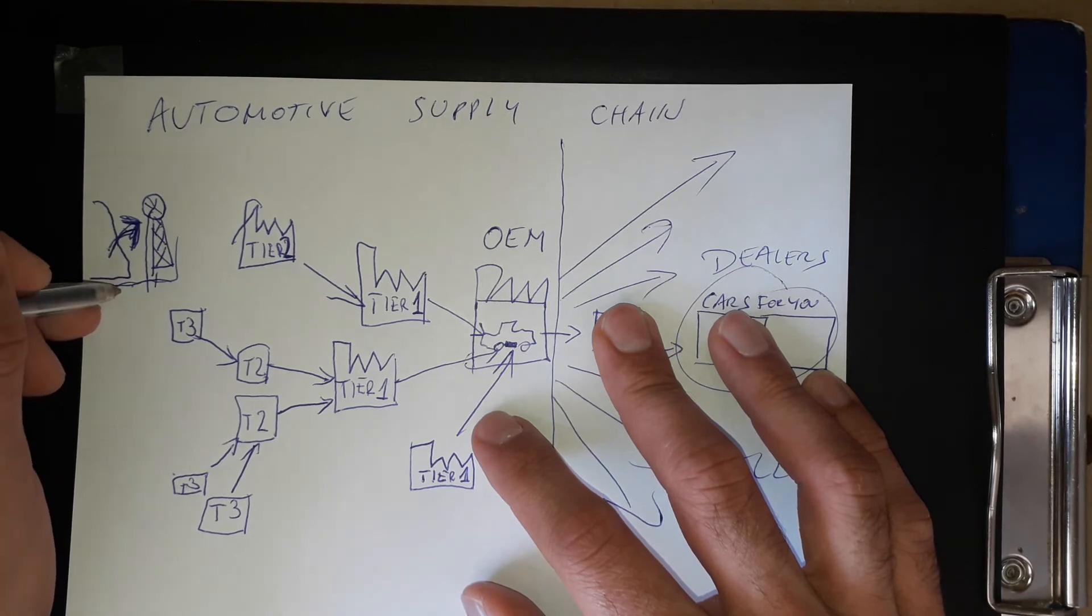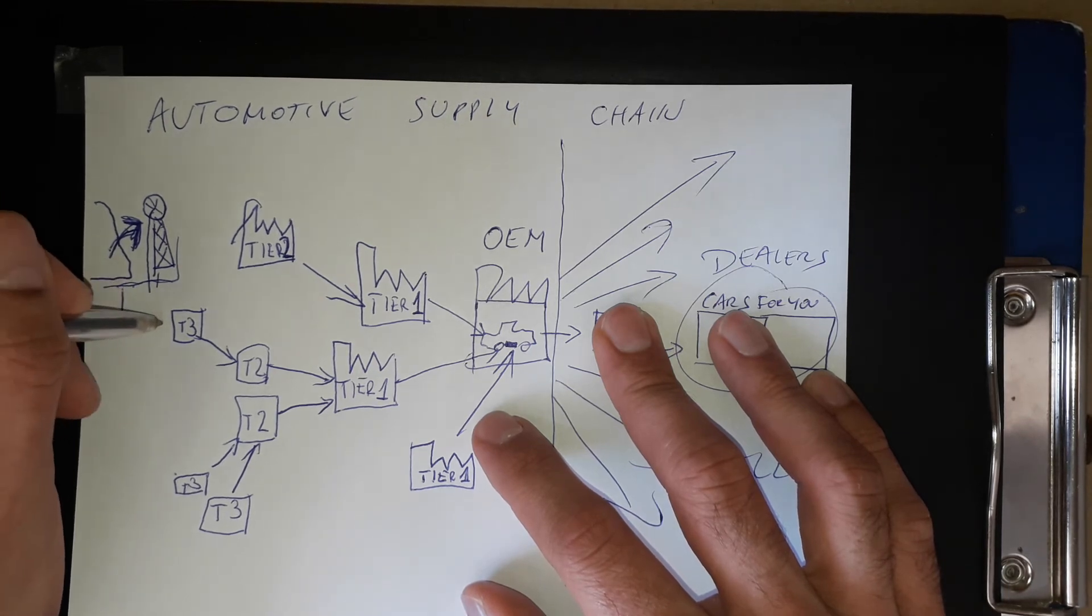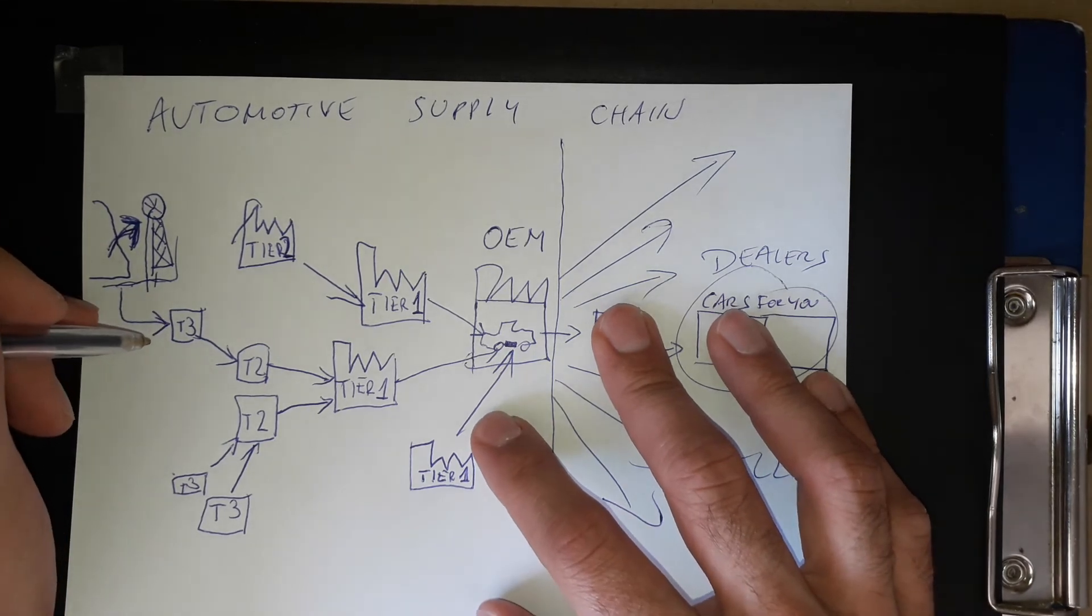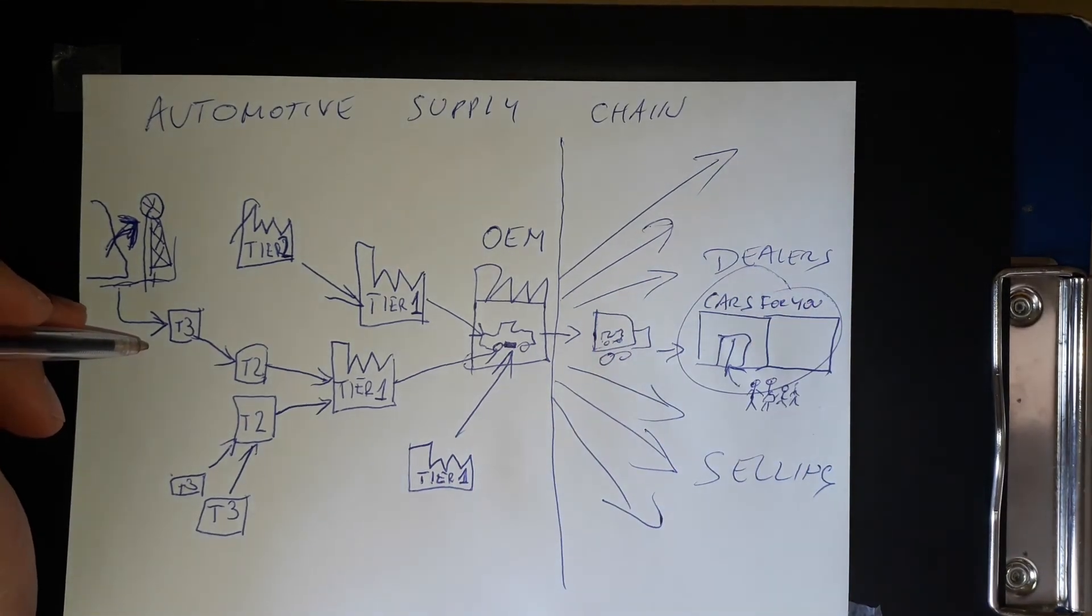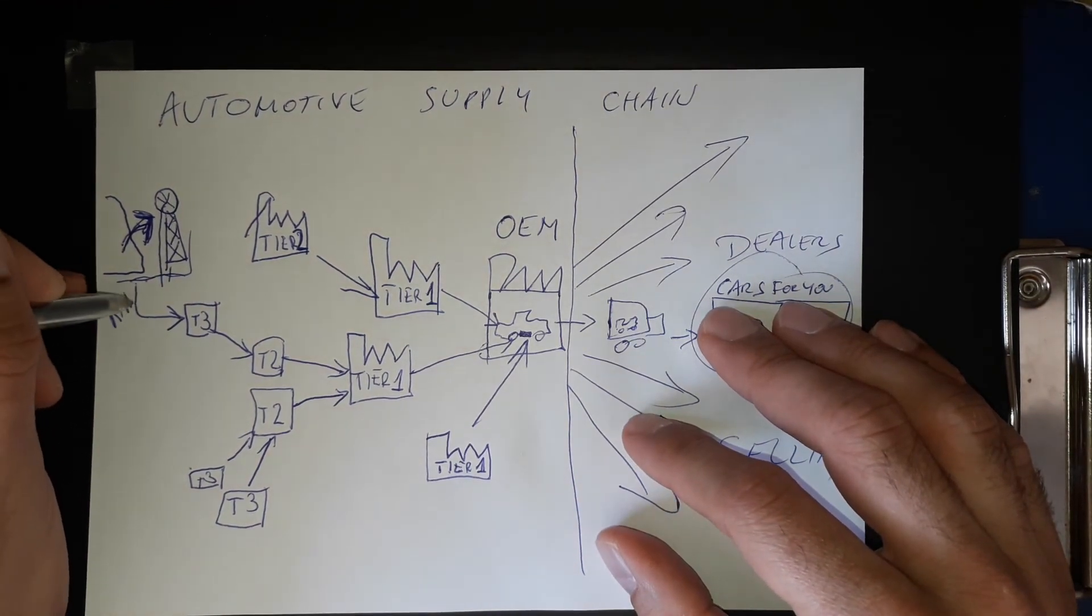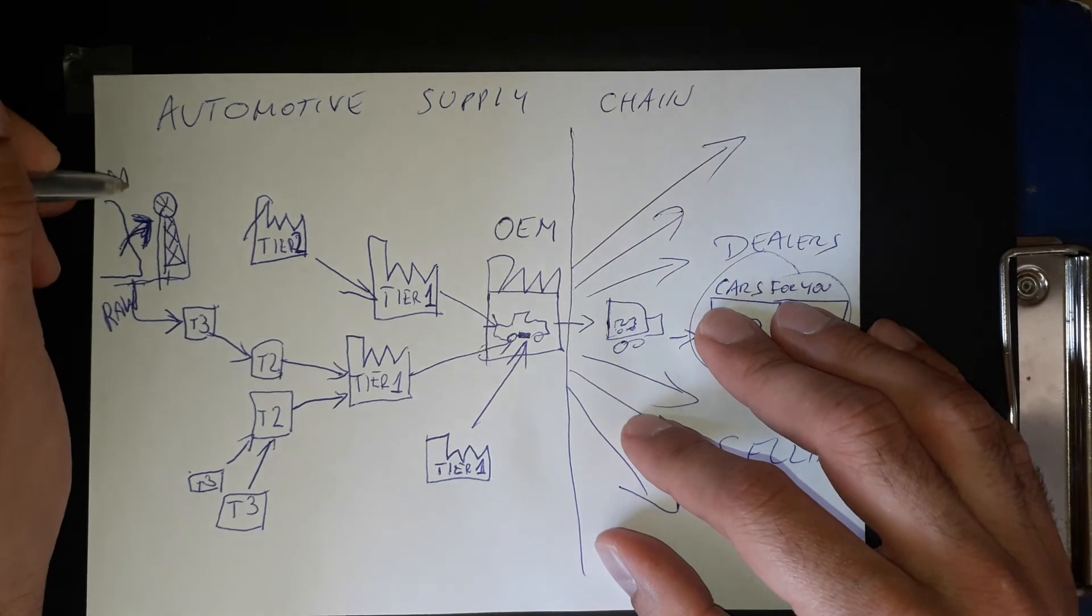The mine is supplying it to the tier three, for example, and they are producing something from this raw material. So this is the raw material just going from a mine.